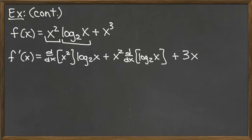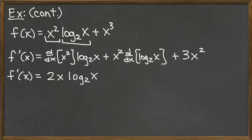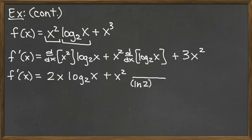The derivative of x cubed by the power rule is 3x squared. Now finishing off the product rule pieces: the derivative of x squared is 2x by the power rule, multiplied by log base 2 of x. Then we have x squared times the derivative of log base 2 of x. That derivative is a base-b logarithm, so it has the extra factor of natural log of the base on the bottom — natural log of 2 — and since it's log of simply x, we get 1 over x times natural log of 2. Then we add 3x squared.